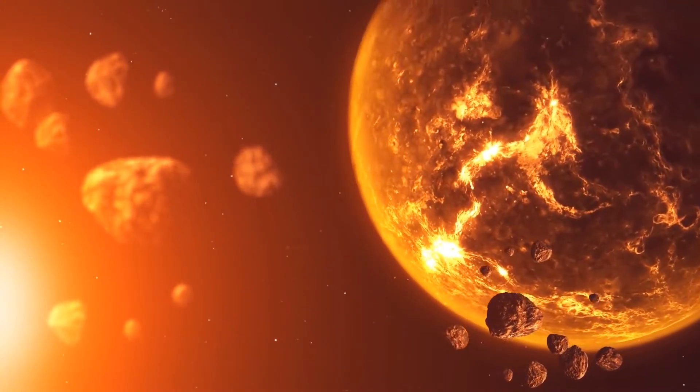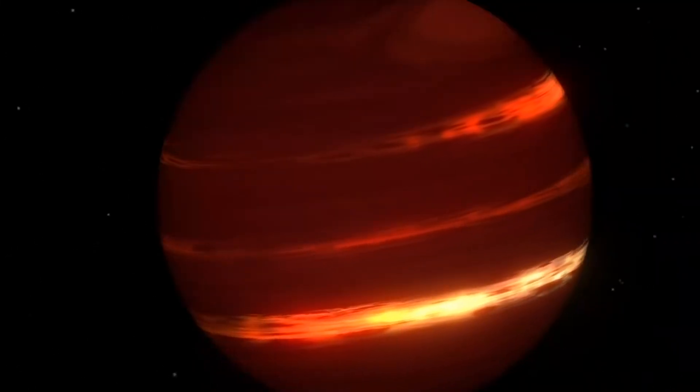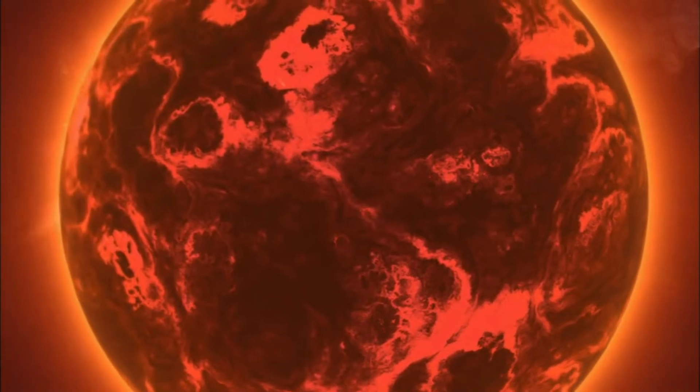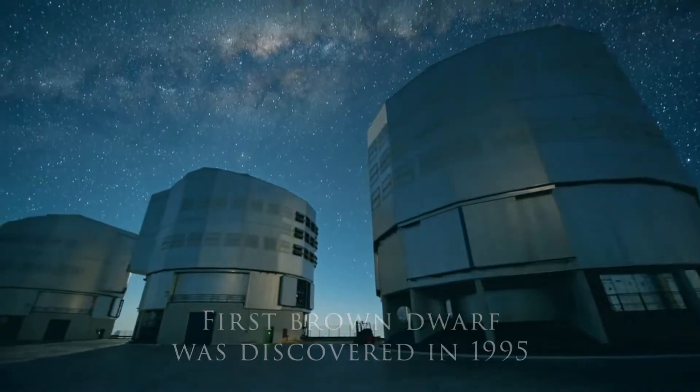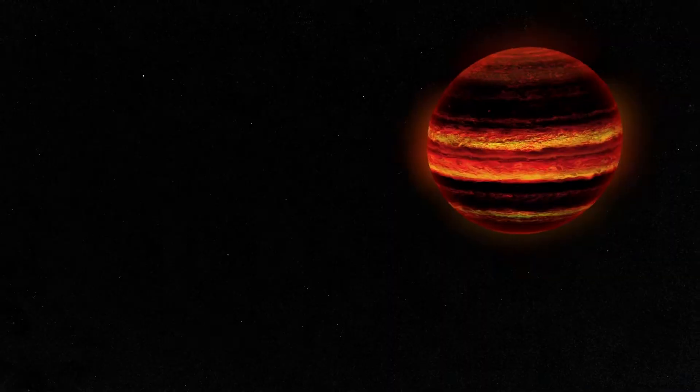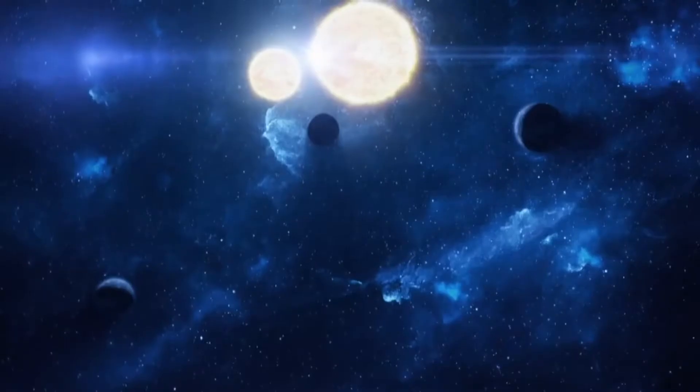Although brown dwarfs are not actually brown but appear from deep red to magenta depending on their temperature. Starting in 1995, astronomers have been able to detect a few nearby brown dwarfs, and all of them so far are parts of a binary system.